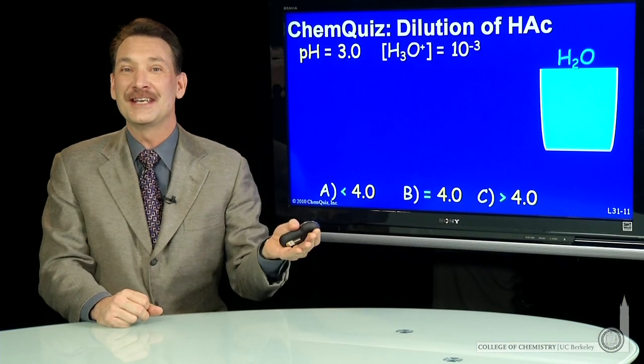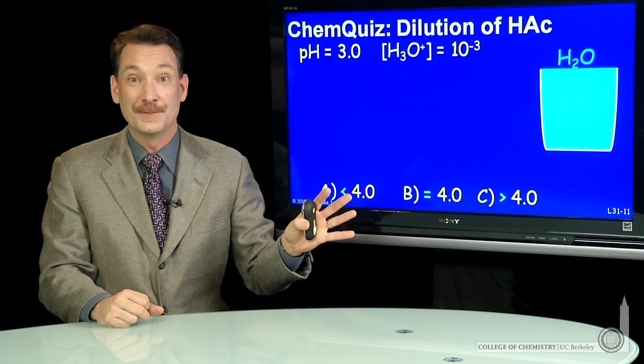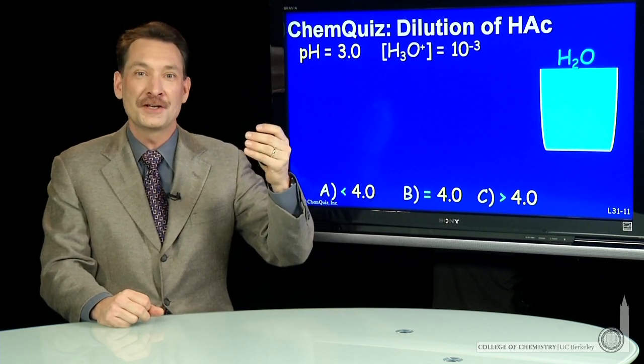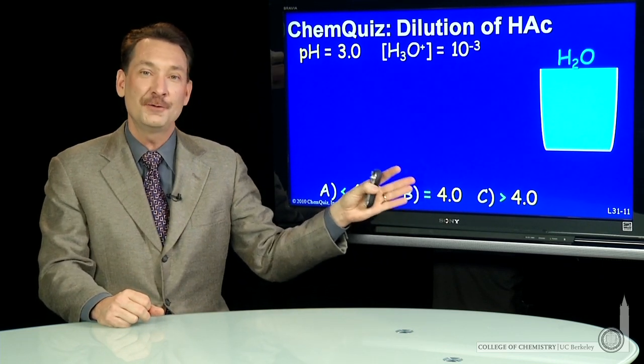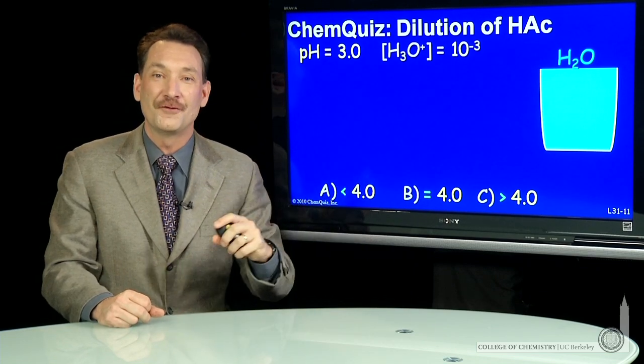We've taken some acetic acid, HAC, at pH 3 and diluted it by a factor of 10. We're trying to determine: is the new pH equal to, greater than, or less than 4?